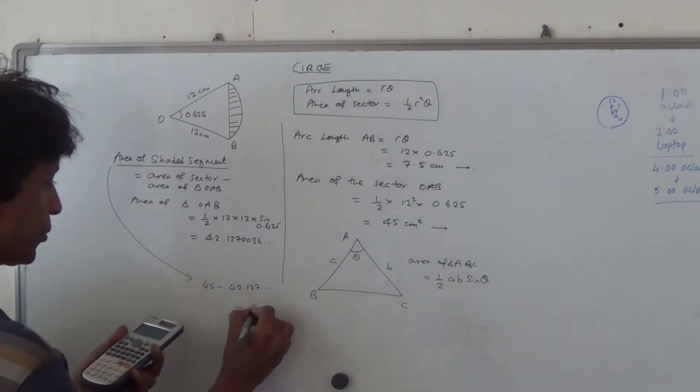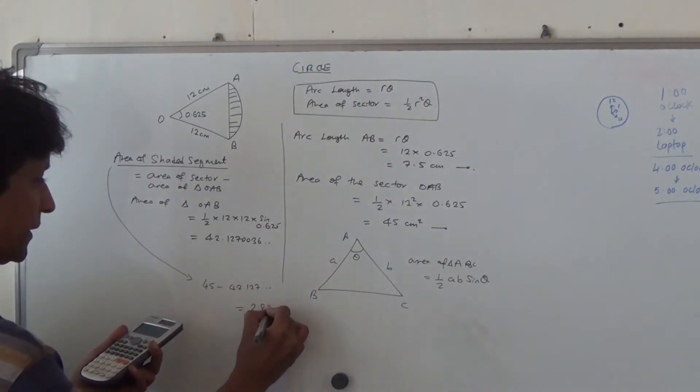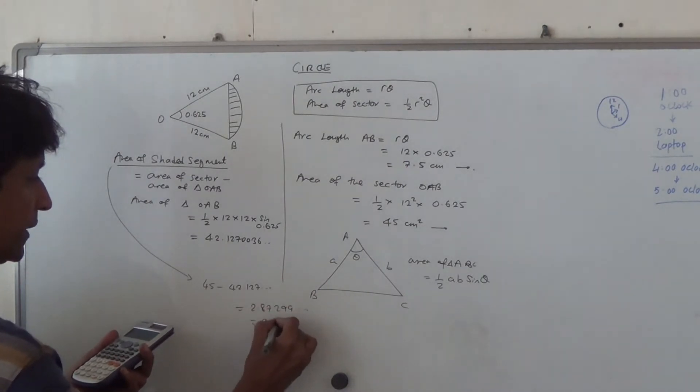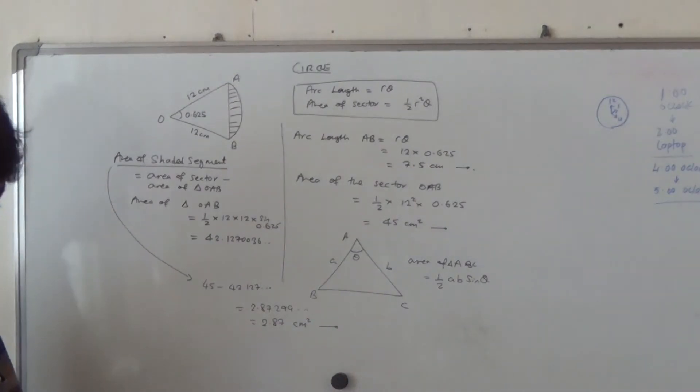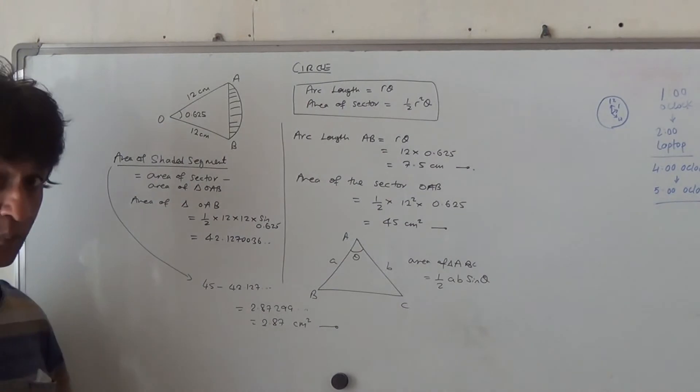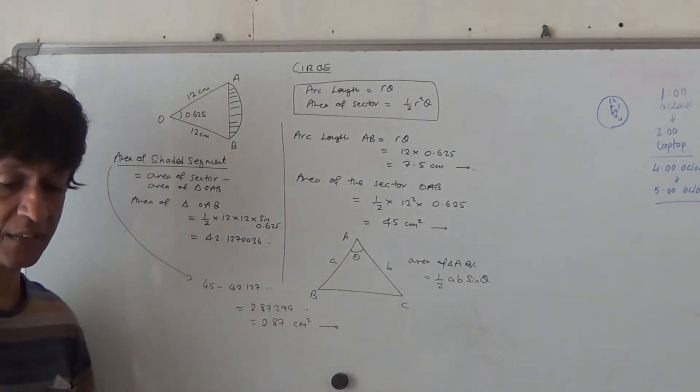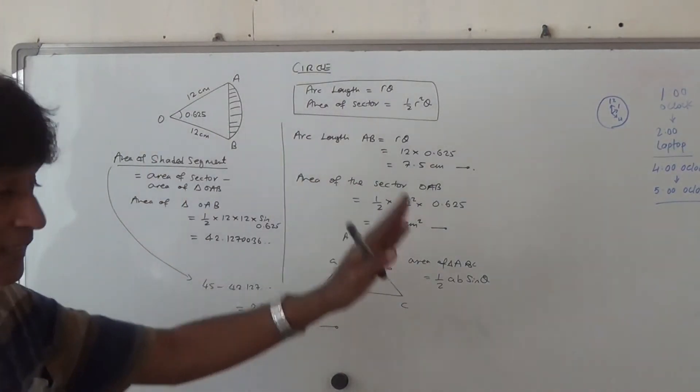And you get 2.87299 and so on. So that may be 2.87 centimeters squared. Here we go. This was very easy as an example to be able to understand this chapter on circle using radians.